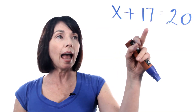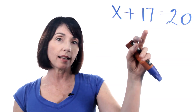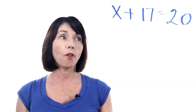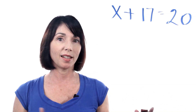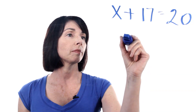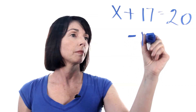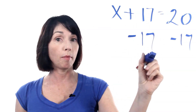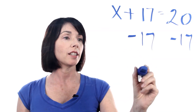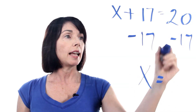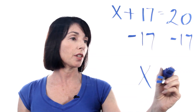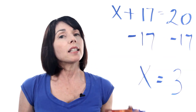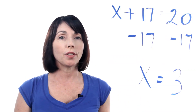In this case we're adding 17 to X, so what we're going to do is subtract 17 from both sides of the equation. X plus 17 minus 17 just leaves us with X, and 20 minus 17 gives us 3. So X equals 3. This is pretty much how you solve these.